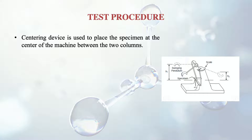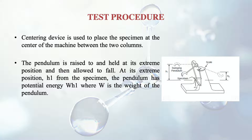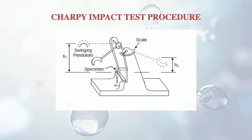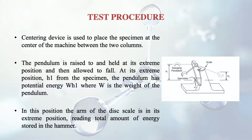In the Charpy test procedure, a centering device is used to place the specimen at the center of the machine between the two columns. The pendulum is raised to and held at its extreme position. At this extreme position, if the pendulum is at a height h1 from the specimen, the pendulum has potential energy W×h1, where W is the weight of the pendulum. At this position, the arm of the disc scale is at its extreme position and reads the total amount of energy stored in the hammer.